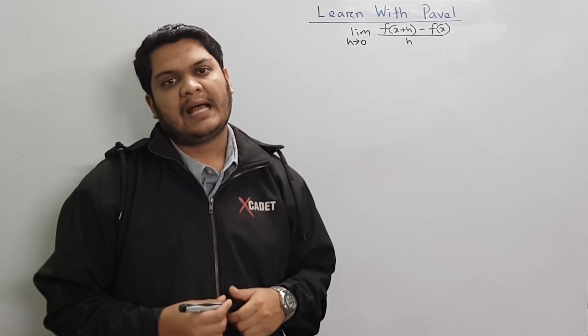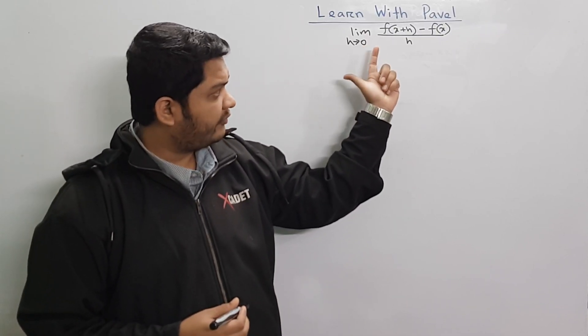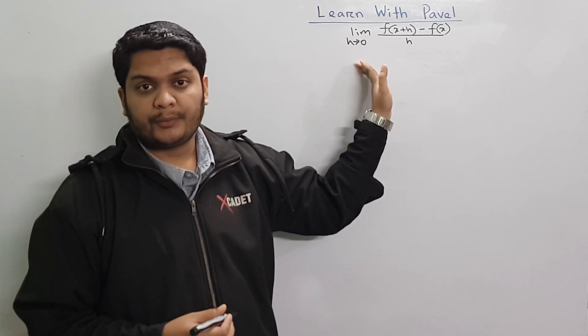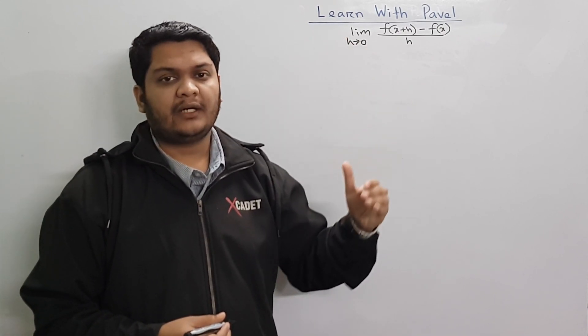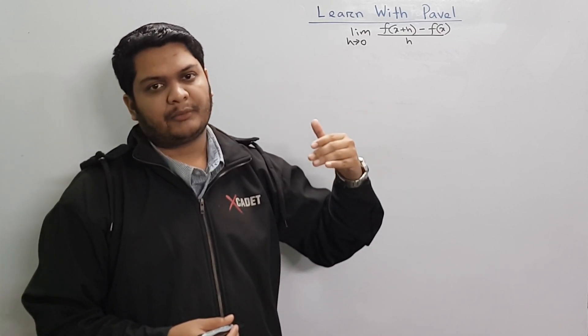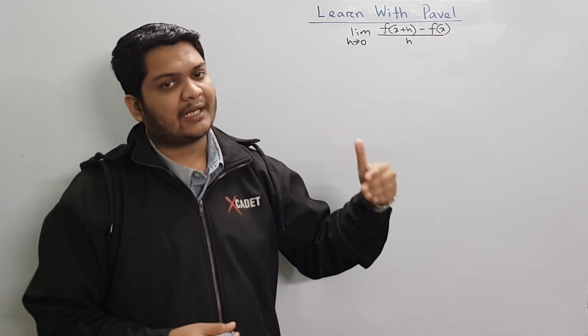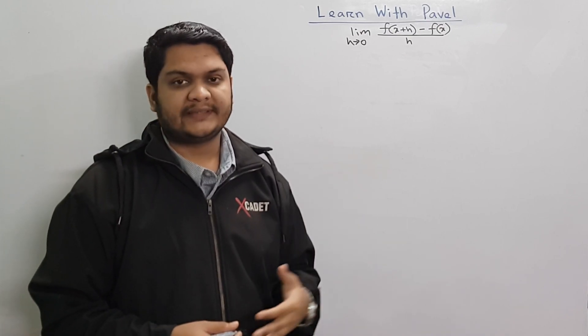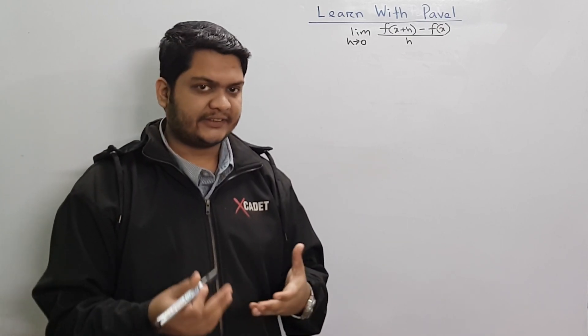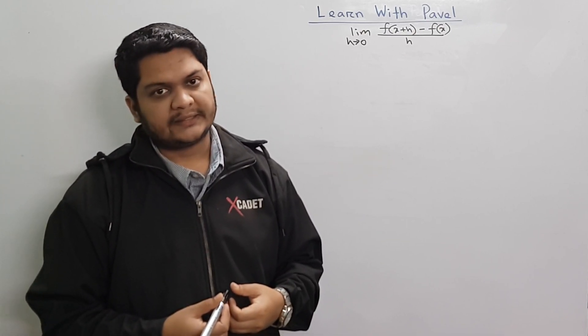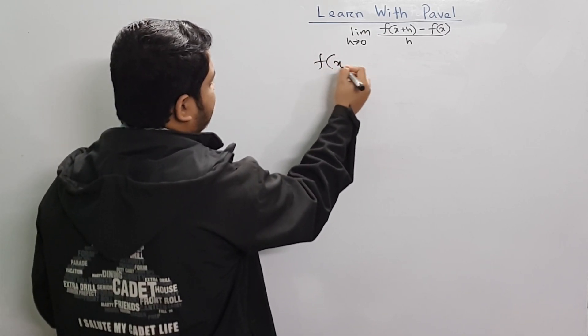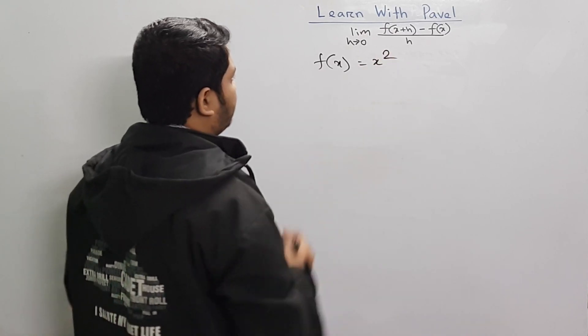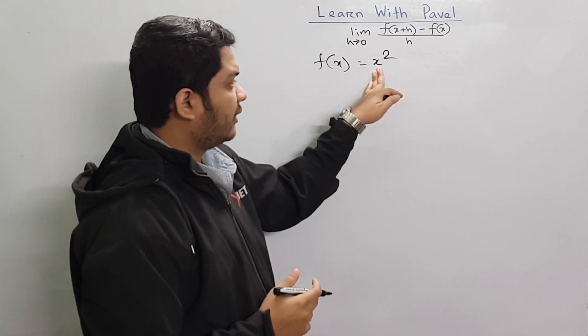Today we have seen the difference between two functions. We have a function f of x is equal to x square.